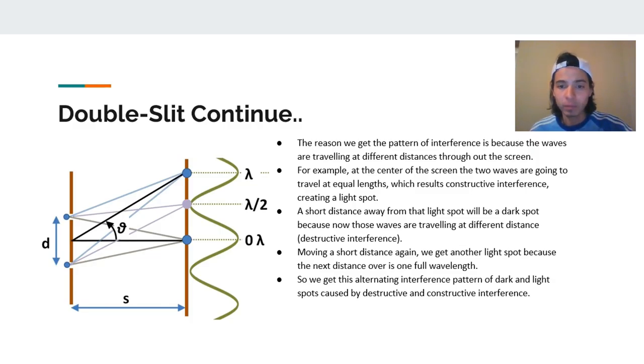However, a short distance away from the light spot will be a dark spot because now those waves are traveling at different distances. And that's due to destructive interference. This wavelength is different than this wavelength. Their difference is lambda over 2. And you see that when there's that difference, they're going to destructively interfere. And then if you move a short distance again from that point, we're going to get a lambda difference, which is a complete wavelength. So there we will get a light spot because of the full wavelength. Since here is half of wavelength, the next point will be full wavelength. So we get this alternating interference pattern of dark and light spots caused by destructive and constructive interference.